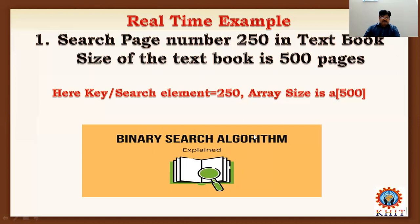In the binary search algorithm, the search element is 250. The array size is 500, meaning the total number of pages in the textbook is 500. Among those 500 pages, we need to find page number 250 using the binary search algorithm with Divide and Conquer strategy. In this way, we can solve many problems.